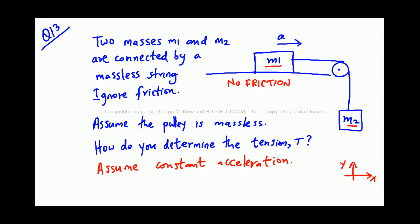Question number 13: Two masses m1 and m2 are connected by a massless string. Ignore friction. Assume the pulley is massless. So here is the pulley, the pulley is massless. How do you determine the tension T? Assume constant acceleration.